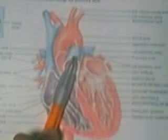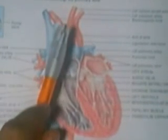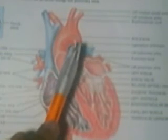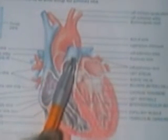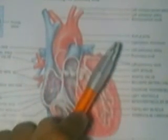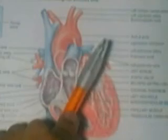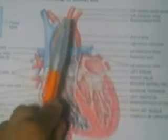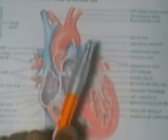The blood then goes to the lungs, because the pulmonary trunk divides into the right and left pulmonary arteries — called arteries because they are taking blood away from the heart. The blood goes to the lungs and gets new oxygen.